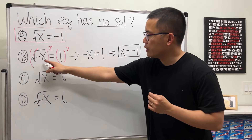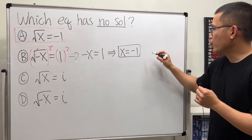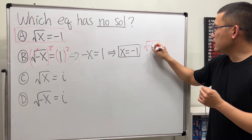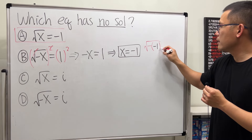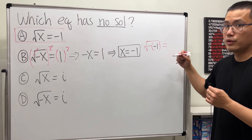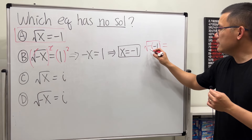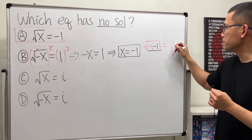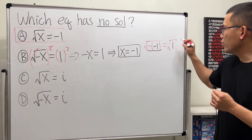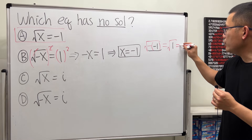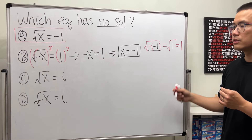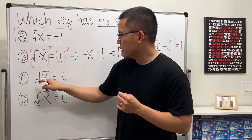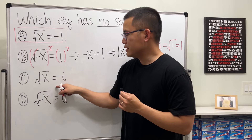This will work. Let's plug in and check. Plug negative 1 into x: we get square root of negative times negative 1. Working inside out, negative times negative 1 is positive 1, and the square root of 1 is 1. Perfect, so it works.